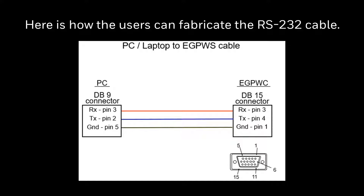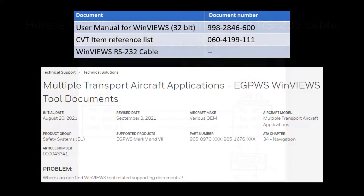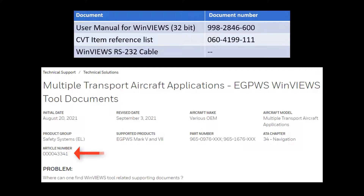Here is how users can fabricate the RS232 cable. Details of the User Guide and CVT item reference list documents are attached to Technical Solution Article 43341 in the myaerospace portal and can be downloaded for further reference.